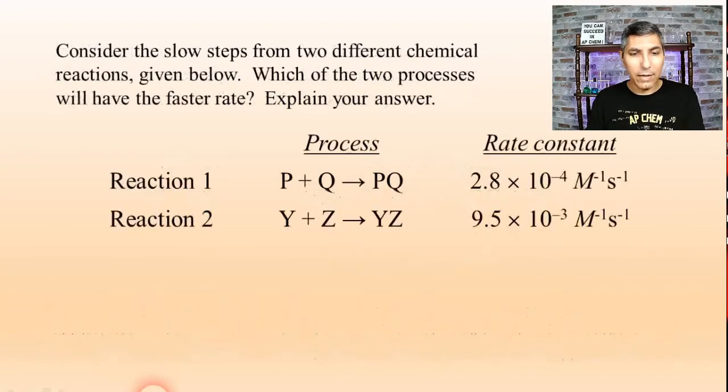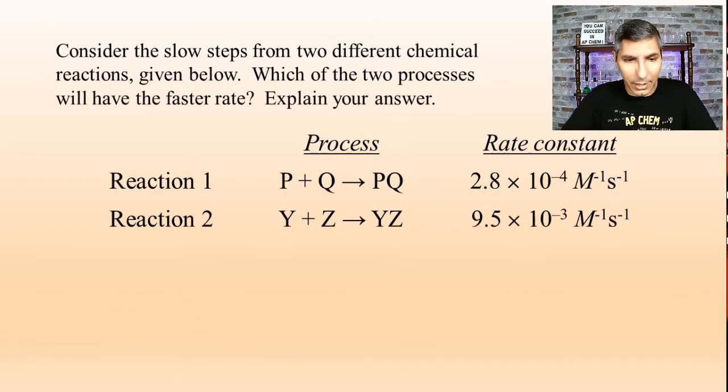Now, let's take a look at one other example here. We have another pair of reactions this time. It says, consider the slow steps from two different chemical reactions given below. Which of the two processes will have the faster rate? And explain your answer. Well, it comes down to the rate constant.